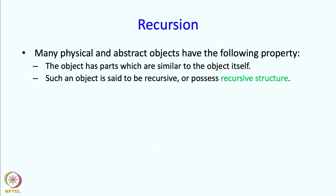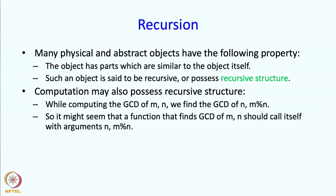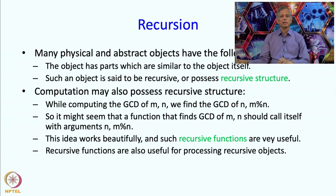Such objects are said to be recursive, or said to possess recursive structure. Computation itself may also possess recursive structure, and you have seen an example of this already. While computing the GCD of M and N, we said that we really should compute the GCD of N and M mod N. So it might seem that a function that finds the GCD of M and N should call itself with arguments N and M mod N. This idea works beautifully and recursive functions are extremely useful, including for processing recursive objects.